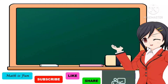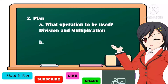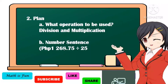After understanding the problem, next we're going to make a plan. In our routine problem, we will determine what operation to be used. In our problem, we're going to use division and multiplication. The number sentence is: 1,268 pesos and 75 centavos divided by 25, times 5, is equal to N.